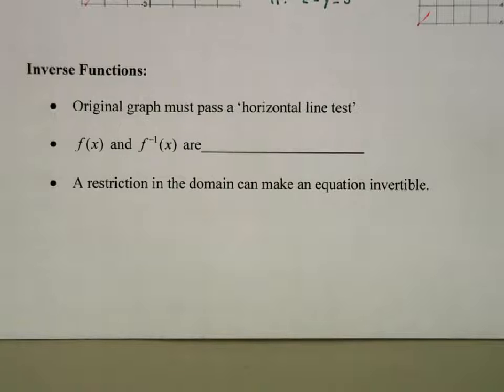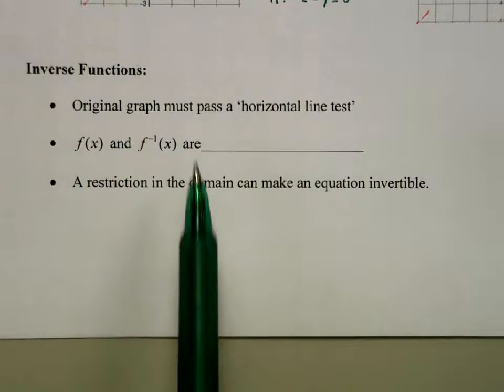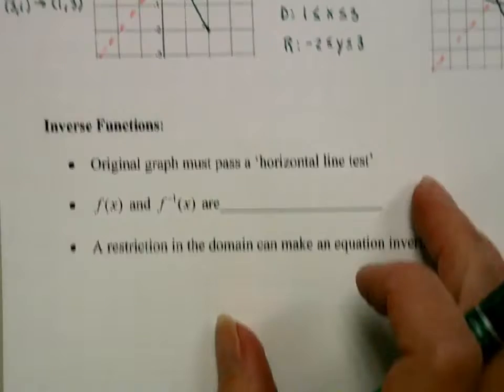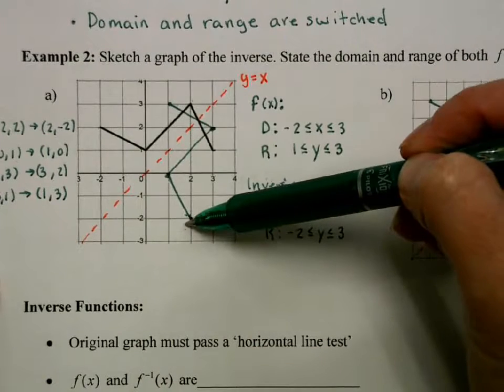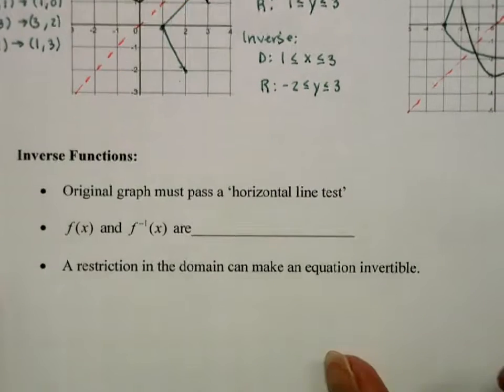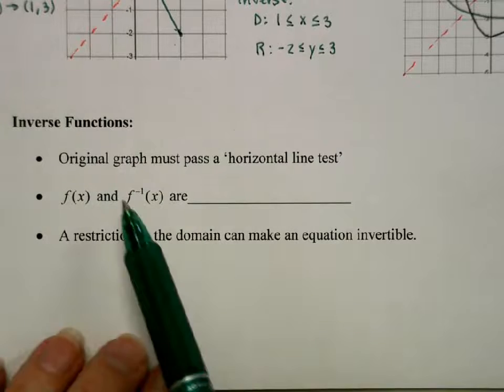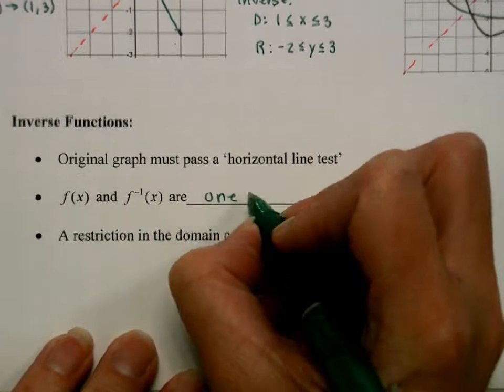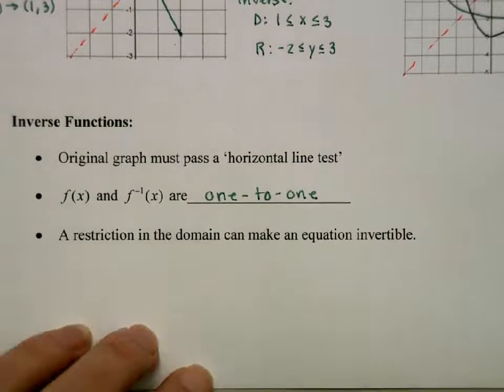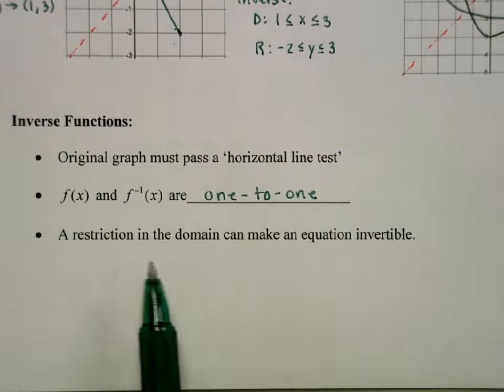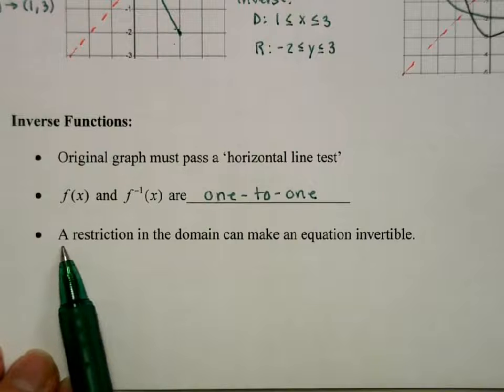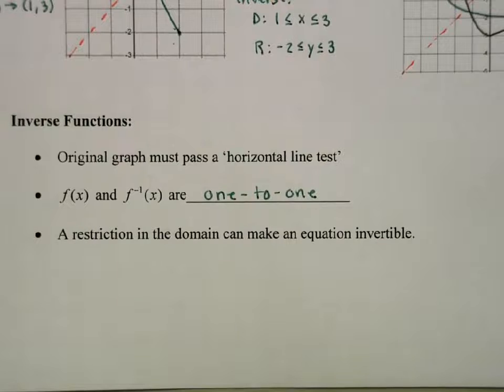So what creates an inverse function? Or how can we tell if the function is an inverse? The original graph must pass a horizontal line test. In these graphs that we had here, that black graph didn't pass a horizontal line test, which means its inverse didn't pass a vertical line test. f and f inverse are 1 to 1, meaning for every x value there is 1 and exactly 1 y value, and for every y value there is 1 and exactly 1 x value. But we can create an invertible function or invertible equation if a restriction on the domain can be made, and we'll see this with something like a parabola.